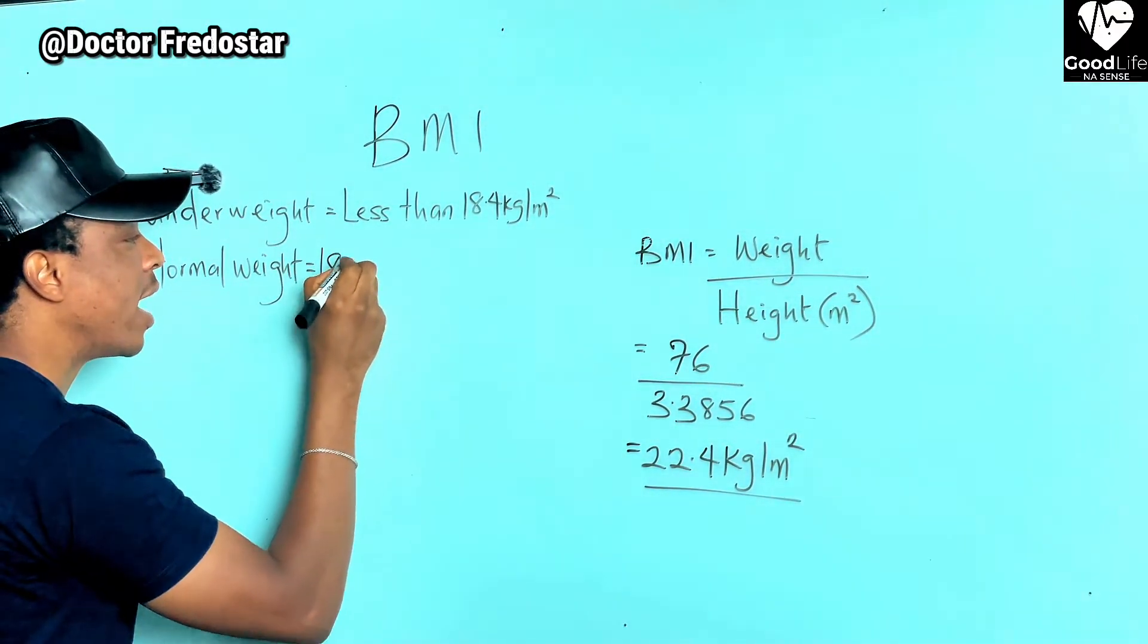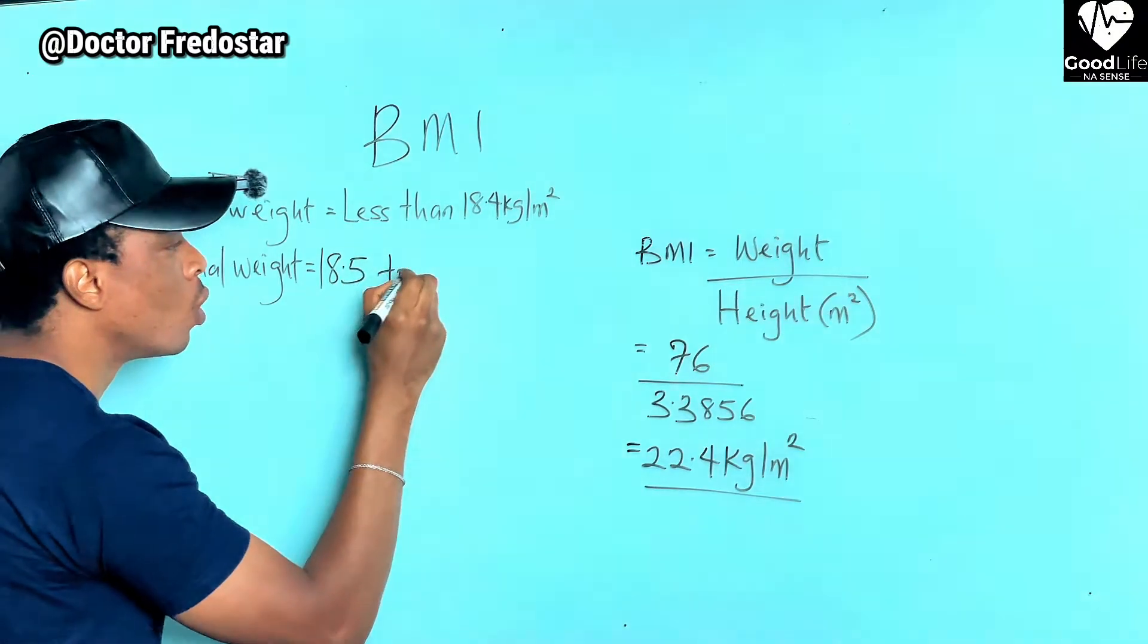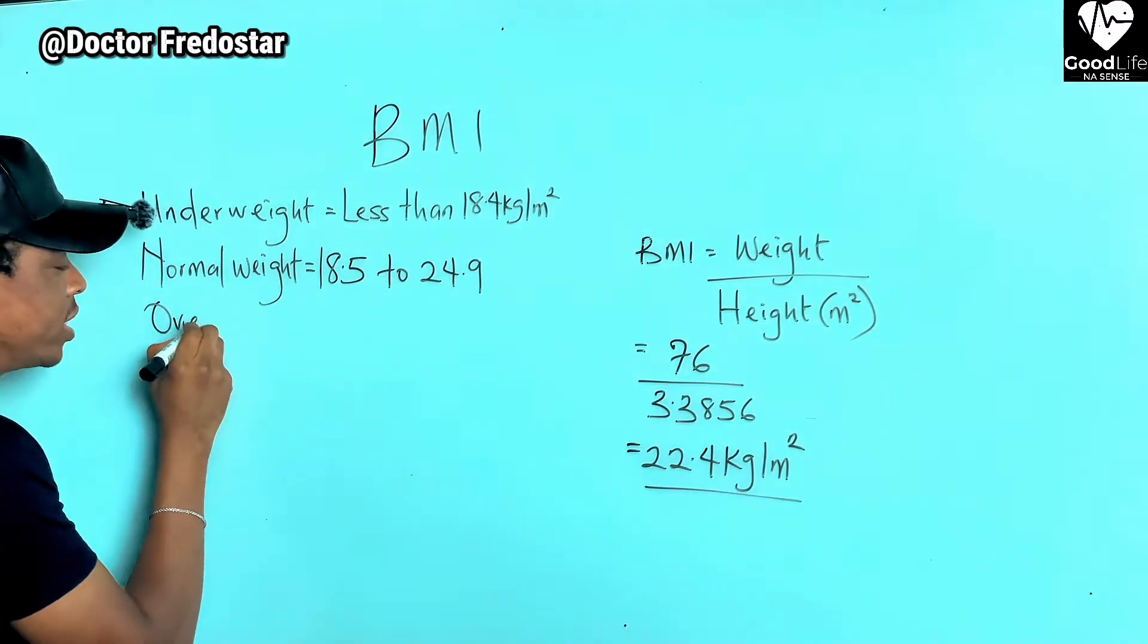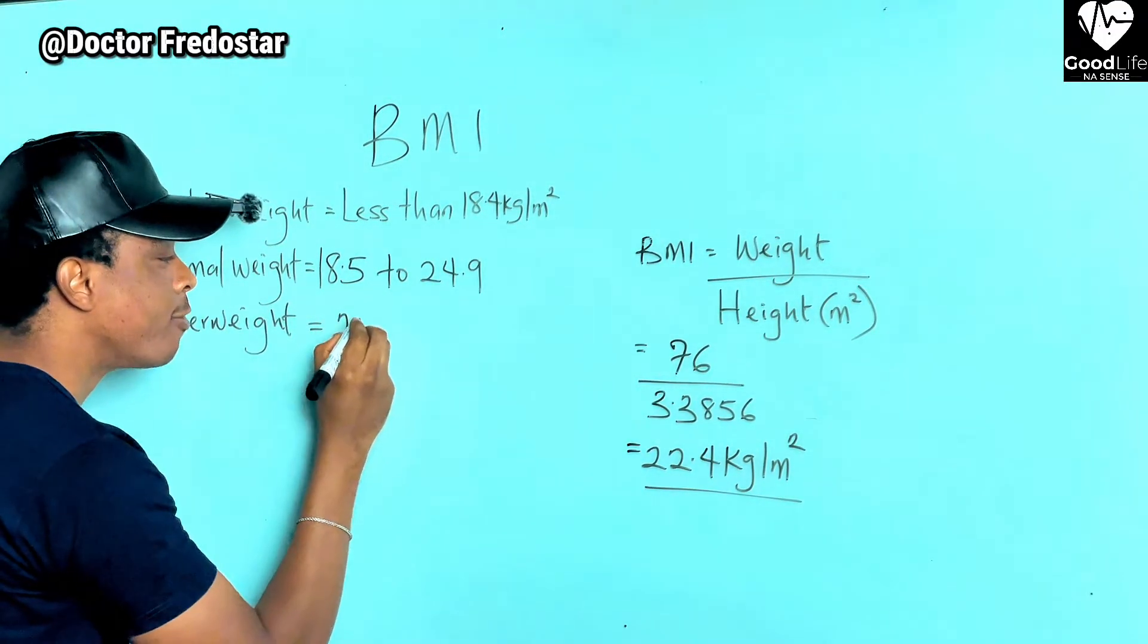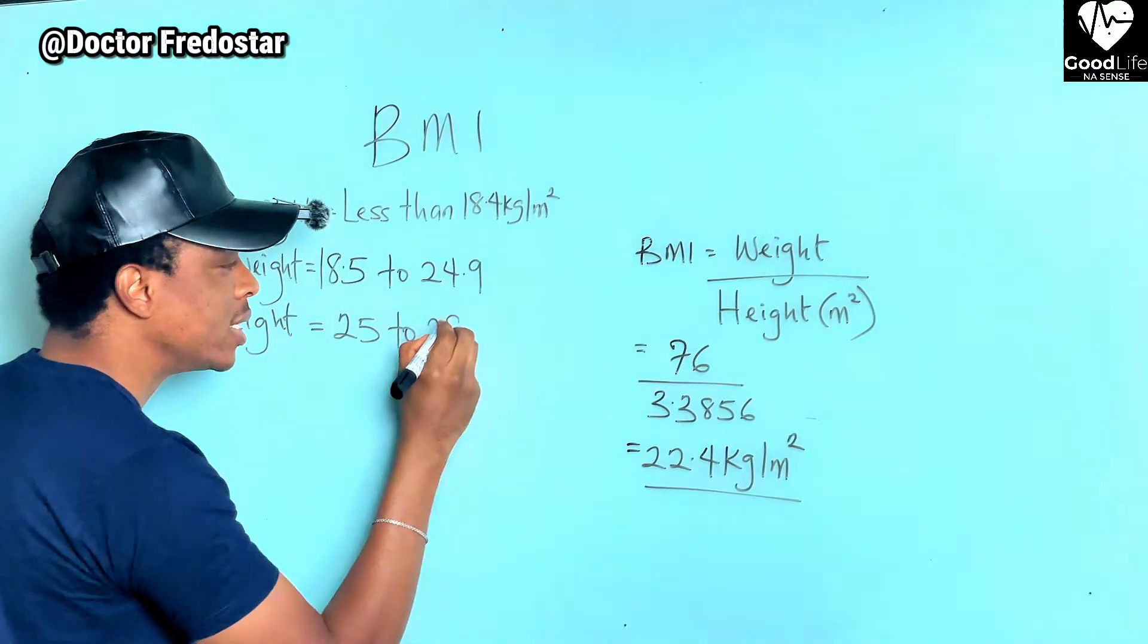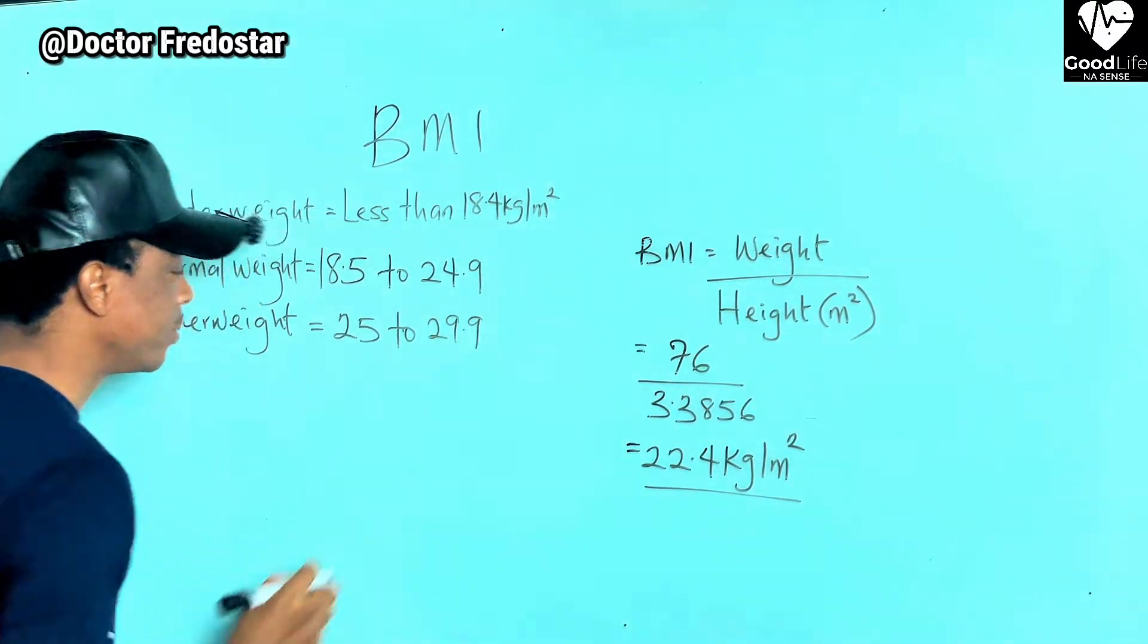If you're overweight, your BMI is from 25 to 29.9.